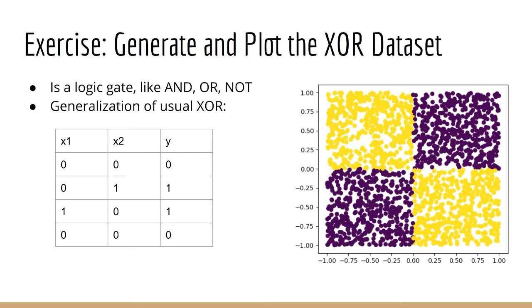If X1 and X2 are both zero, then Y is zero. If either X1 or X2 is one but not both, then Y is one. If X1 and X2 are both one, then Y is again zero.